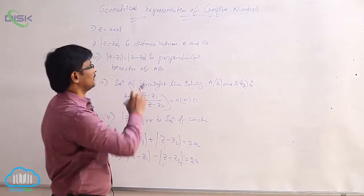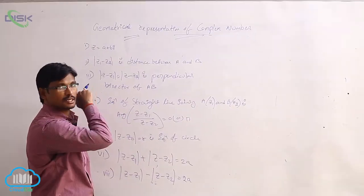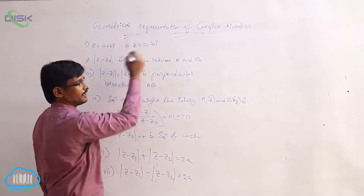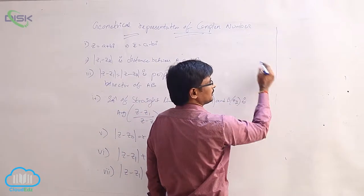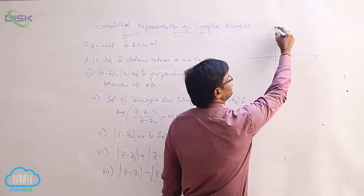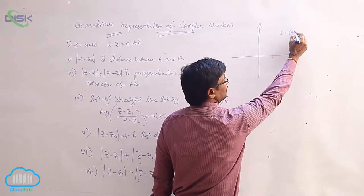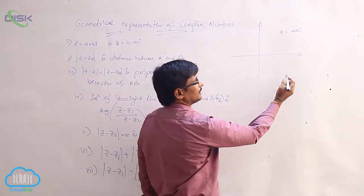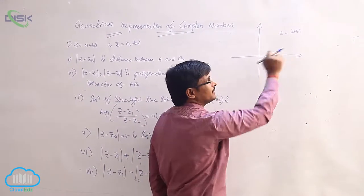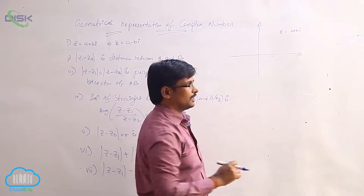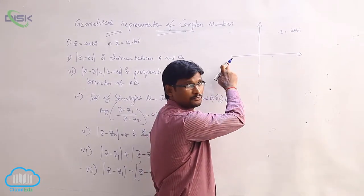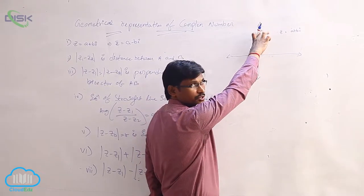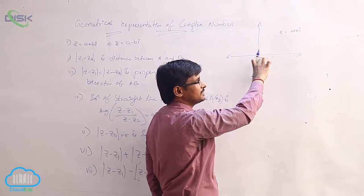The presentation of complex numbers: let z equal to a plus ib. We know that z-bar is a minus ib. If we draw the Argand plane, z equal to a plus ib is a complex number where a is the real part and b is the imaginary part. Both are positive, so this quadrant is positive real, this is negative real, this is positive imaginary, and this is negative imaginary.